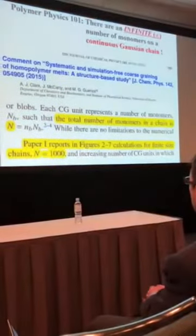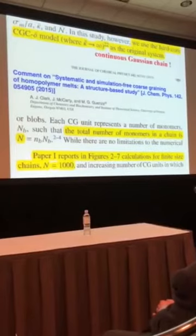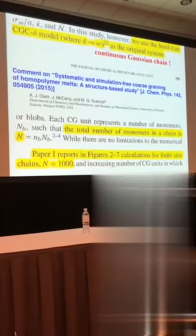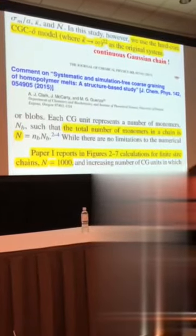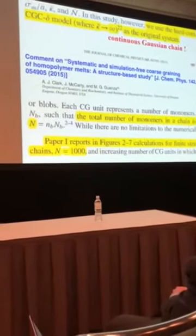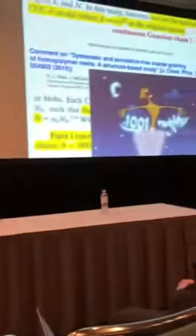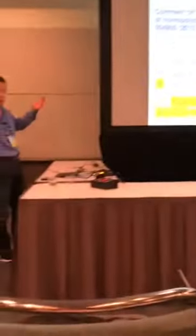They claim there are precisely 1,000 monomers on a continuous Gaussian chain — and these are directly copied from their comment — while this is what we actually wrote in our paper that they commented on. So I don't know where they got this number, but I would suggest they slightly change it to this one, so the genie may help them make their wish come true.